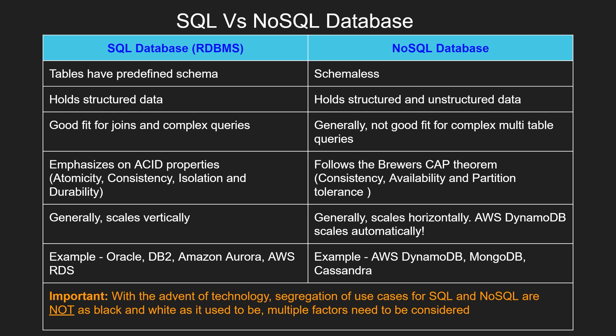One important thing to note: with the advent of technology, the segregation of use cases for SQL and NoSQL are not as black and white as they used to be. Multiple factors need to be considered. For example, we said SQL databases follow ACID properties — however, DynamoDB, Amazon's premier NoSQL database, can also follow ACID properties. And even though SQL typically scales vertically, there's a new Aurora option called Aurora Serverless which can scale horizontally.